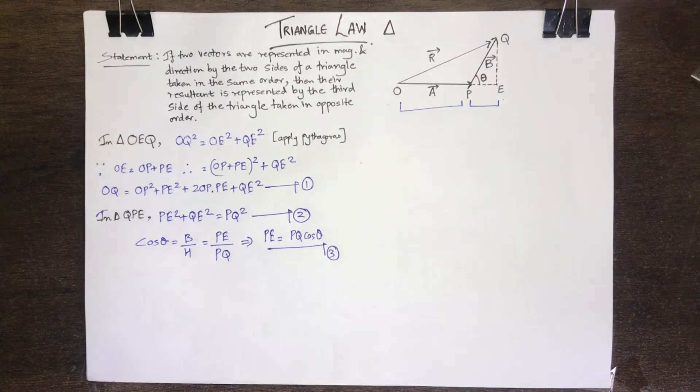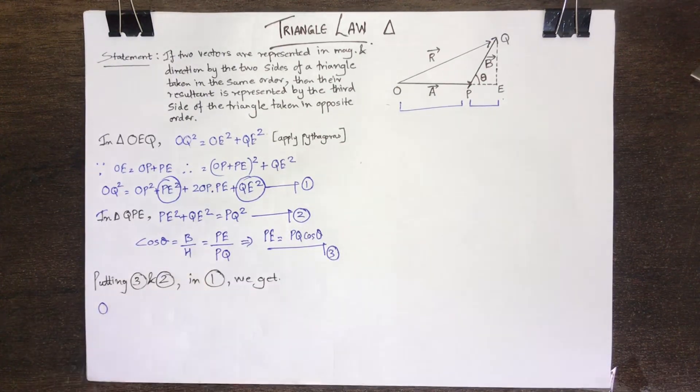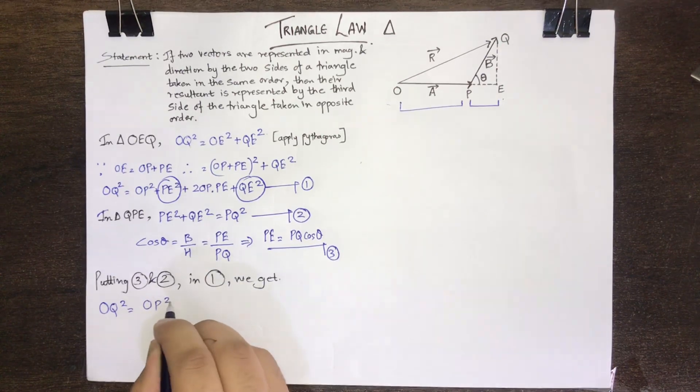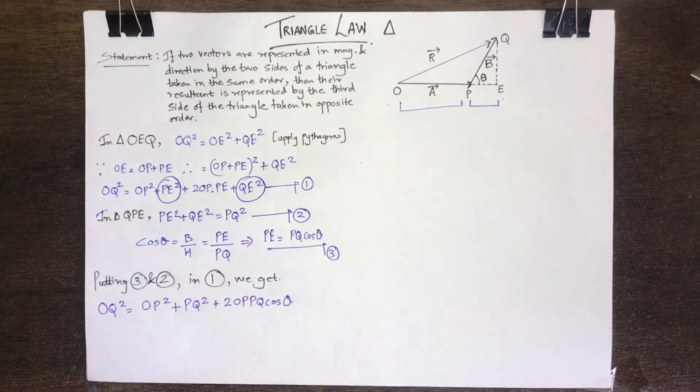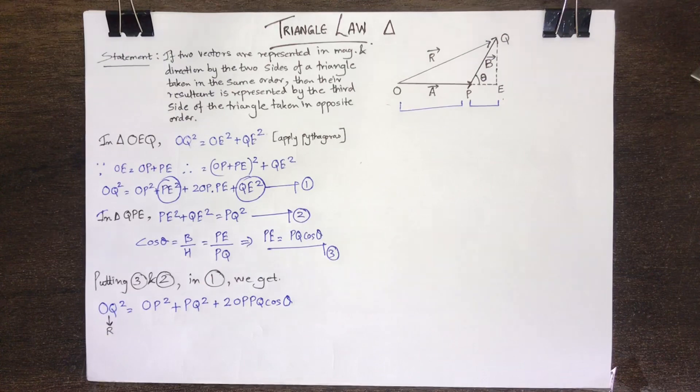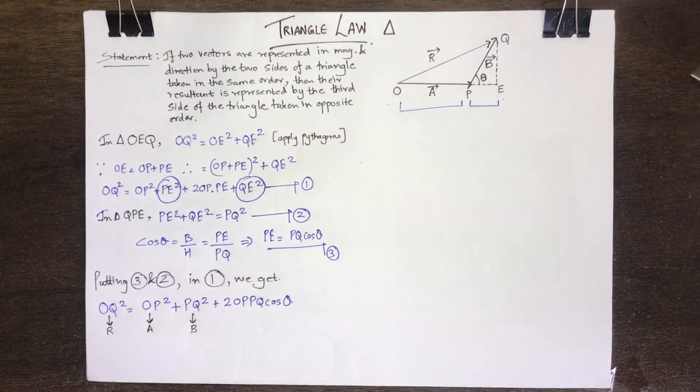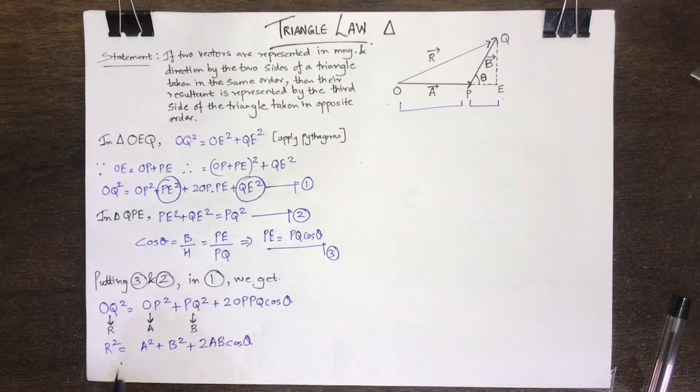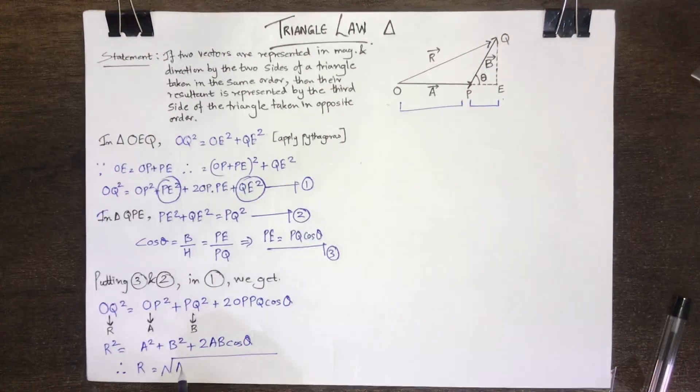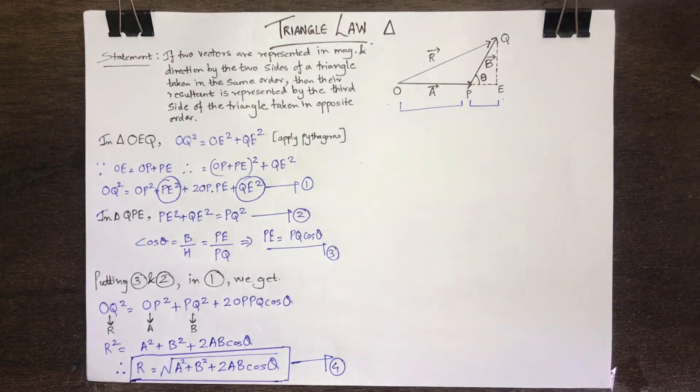Now putting the respective values of PE and QE in the first equation, we get OQ square is equal to OP square plus PQ square plus 2OPPQ cos theta, where OQ is R, OP is A and PQ is represented by B vector. Therefore, the last equation comes out to be R is equal to under root A square plus B square plus 2AB cos theta. Equation 4 represents the magnitude of the resultant R.